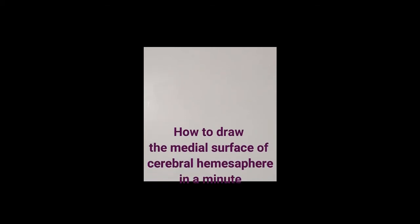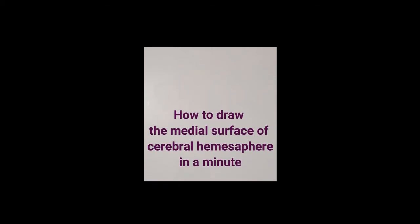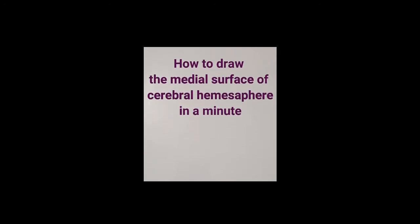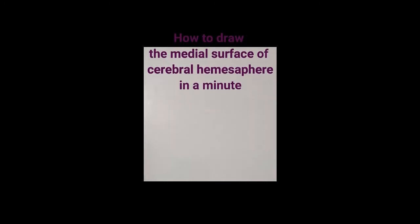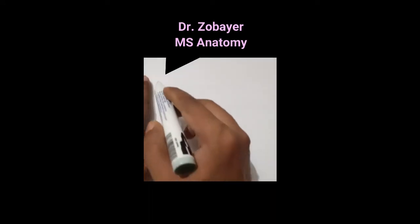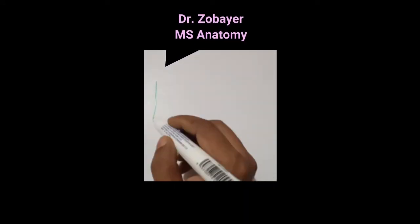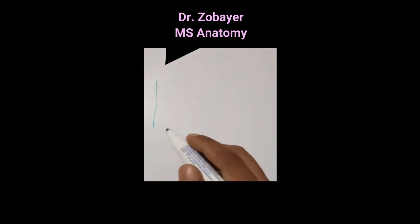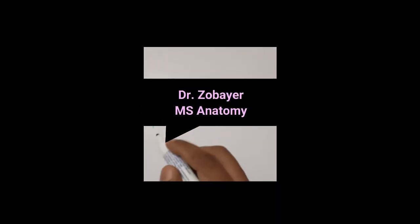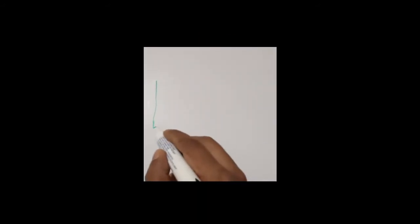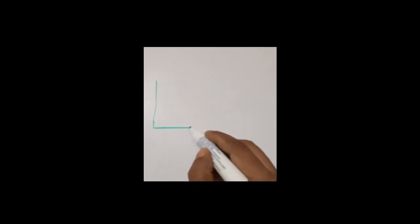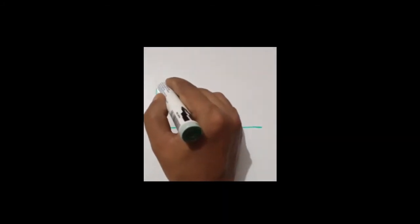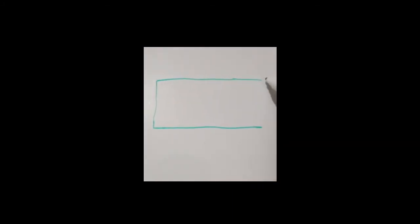My dear students, it is the second video of drawing and labeling the different surfaces of the cerebral hemisphere. Now I shall draw the medial surface very easily. Before drawing, I have to make an outline with a finger like this. In the exam, I am doing it with my whiteboard markers so it has become prominent, but when you do it with your pencil, make a faint line. It is the width, and just make it double to create the length.